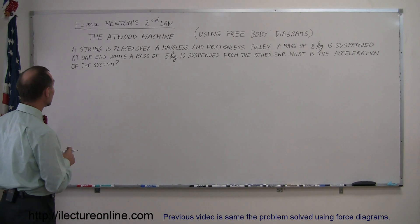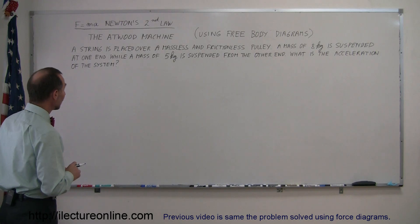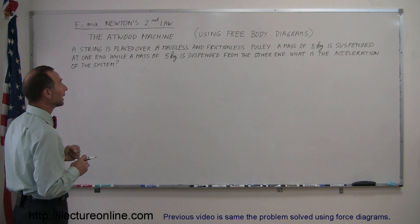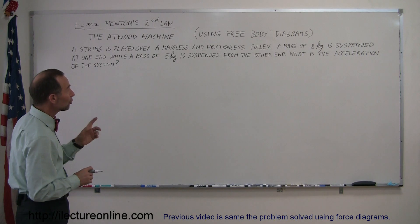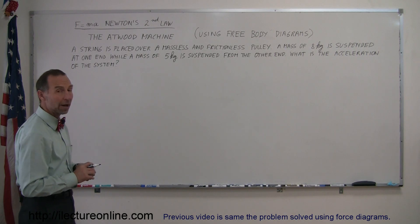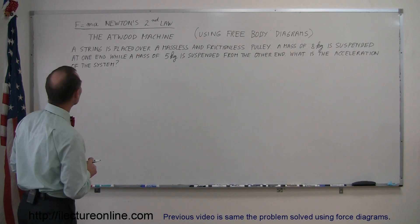Here's another example of how you use F equals mA, Newton's second law, to solve various problems. We're going to do the Atwood machine problem again. That's just another word for a pulley. And this time we're going to use a technique called free body diagrams. How does that work? Well, let's read the problem first.